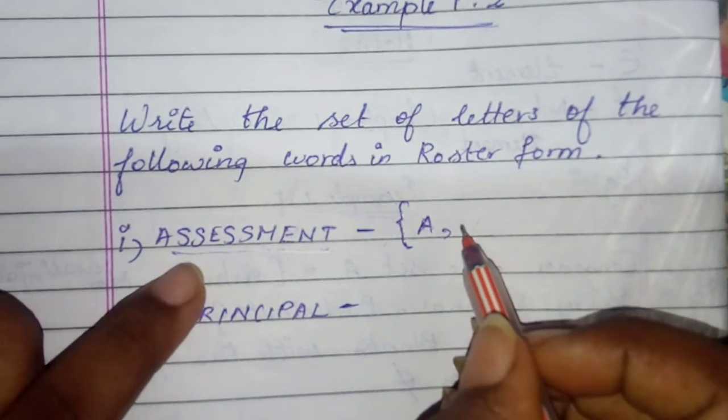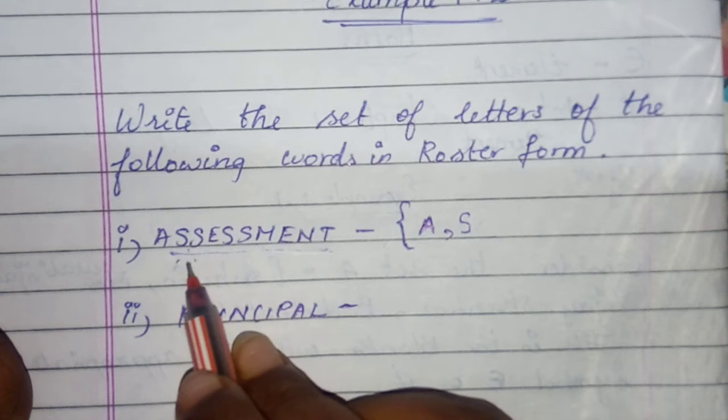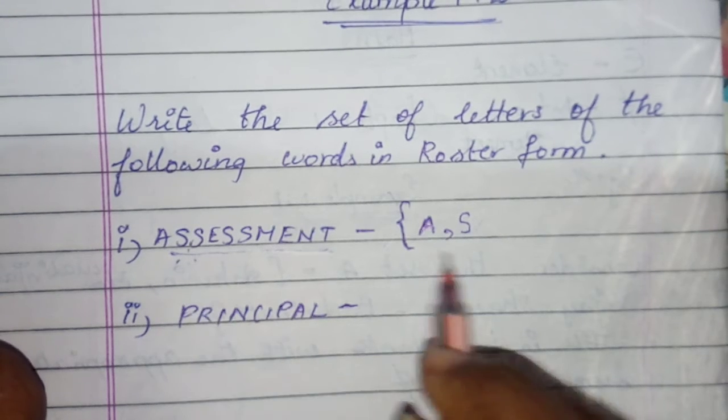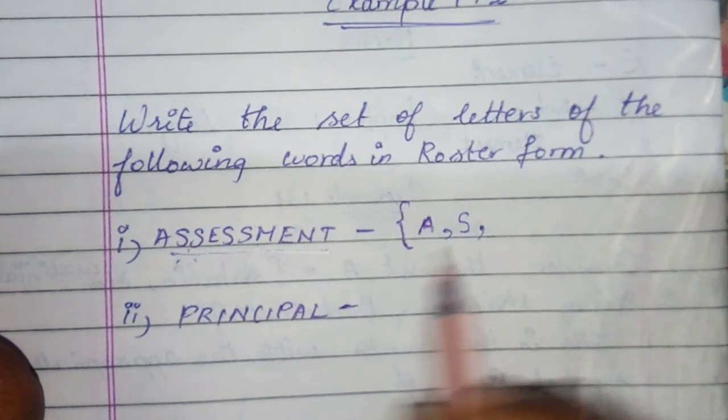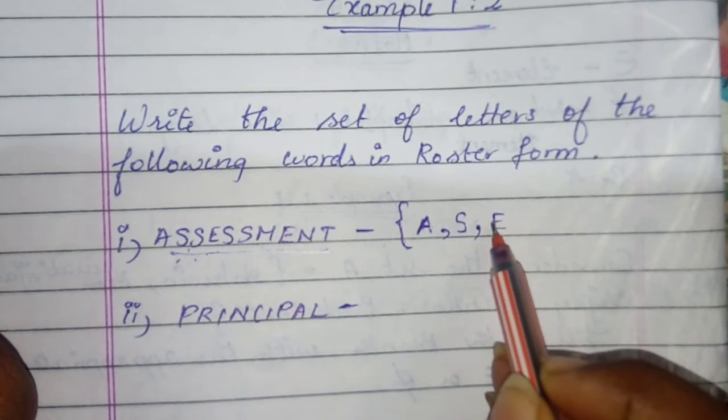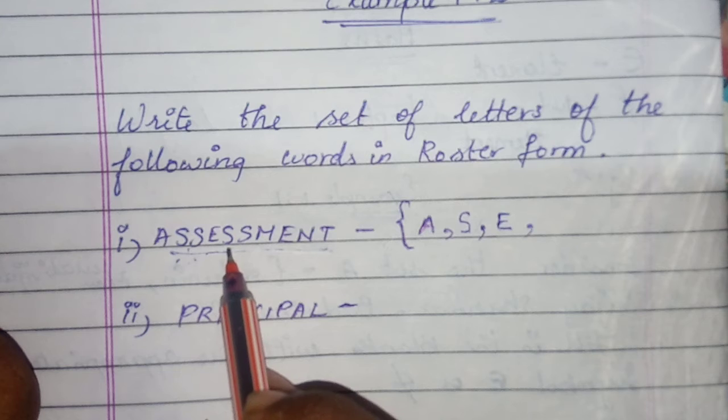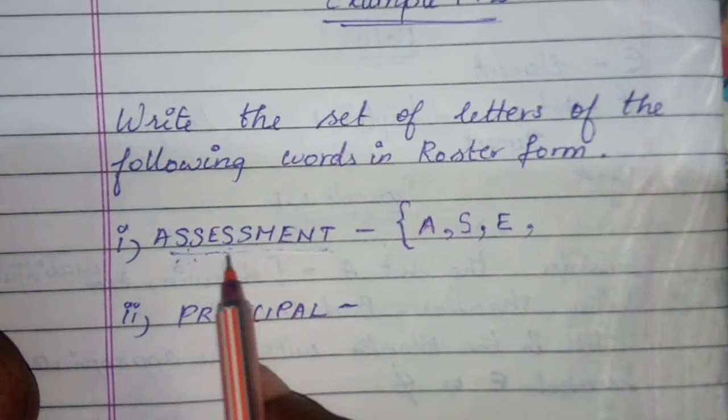A, then S is given here. Then it's repeated, two S's here. It's repeated, so we should not write it. Then E. Then this S is repeated two times, so we should not write the S.